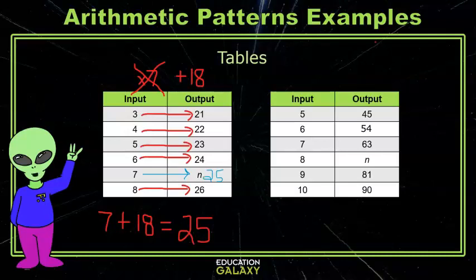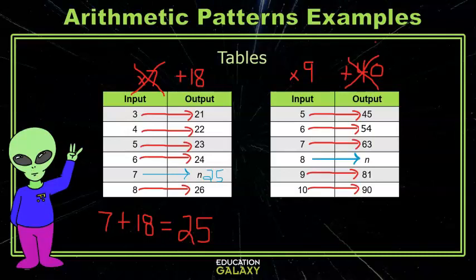Let's try the second table. To get from 5 to 45, I could either multiply by 9 or add 40. If I look at the second set of values to get from 6 to 54, I would have to multiply by 9. The rule multiplying by 9 works for all the values in the table. That means to figure out the missing value, I need to calculate 8 times 9, which is 72. So 72 is my missing value.